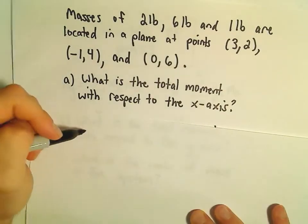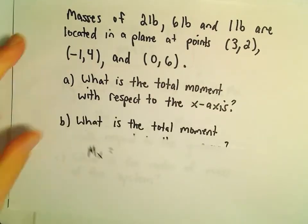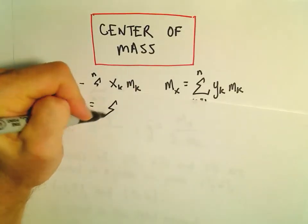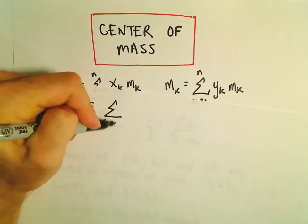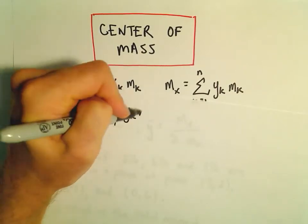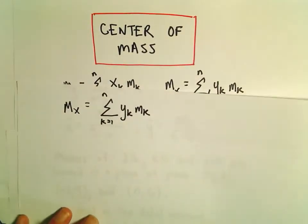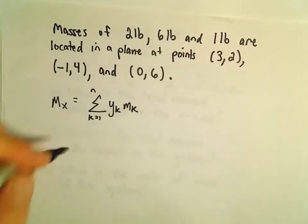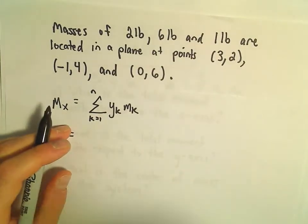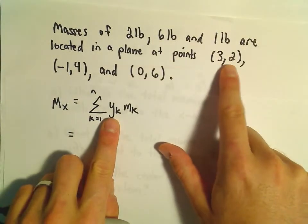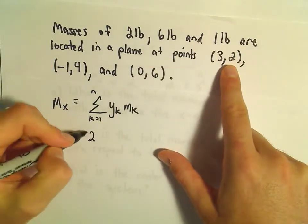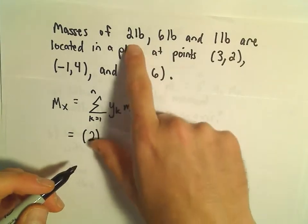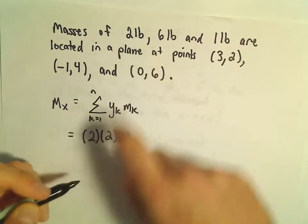To get the moment about the x-axis, we'll use our formula: the summation k equals 1 to n of y sub k times m sub k. What that says to do is look at each point and take the y coordinate. The first point has a y coordinate of 2, and we multiply that by its corresponding mass, which is also 2. Then we add to that the next point's y coordinate, which is 4, and multiply it by its mass, which is 6.